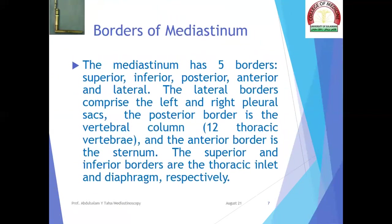The mediastinum has five borders: superior, inferior, posterior, anterior, and lateral. The lateral borders comprise the left and right pleural sacs. The posterior border is the vertebral column in the form of 12 thoracic vertebrae, and the anterior border is the sternum. The superior and inferior borders are the thoracic inlet and diaphragm, respectively.